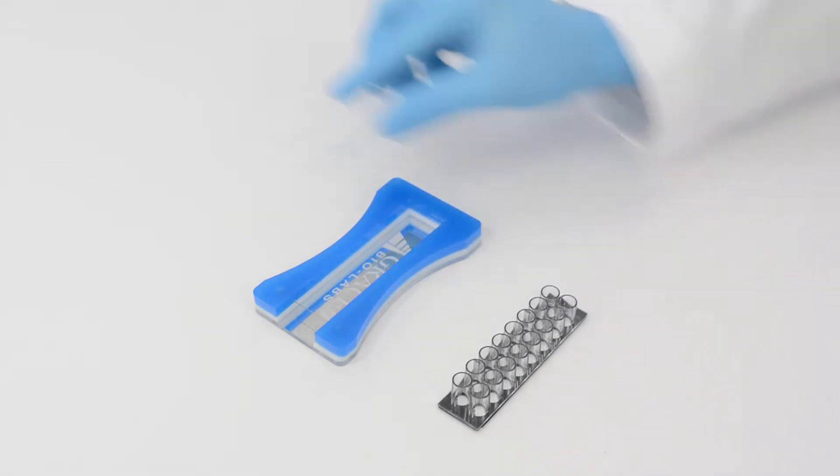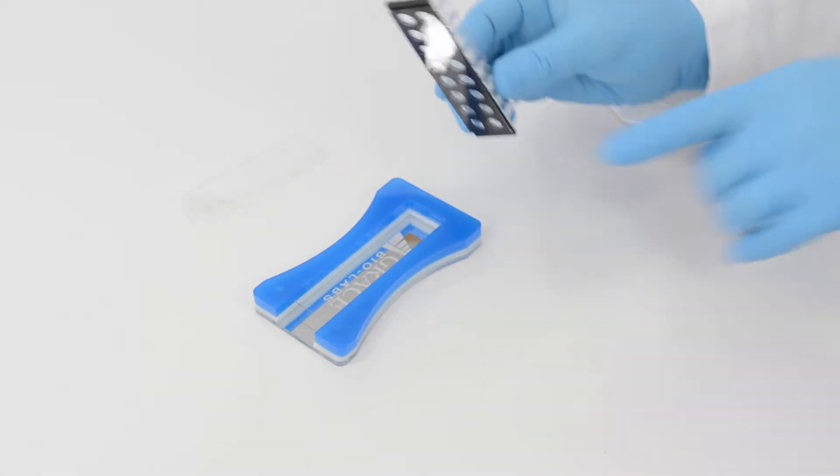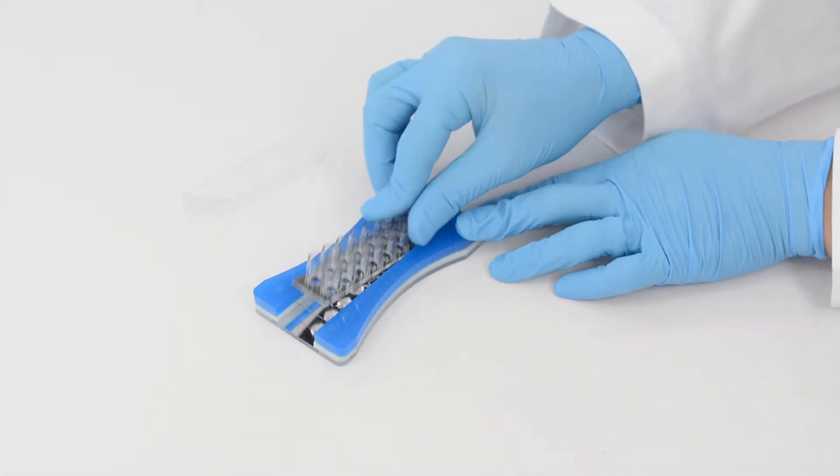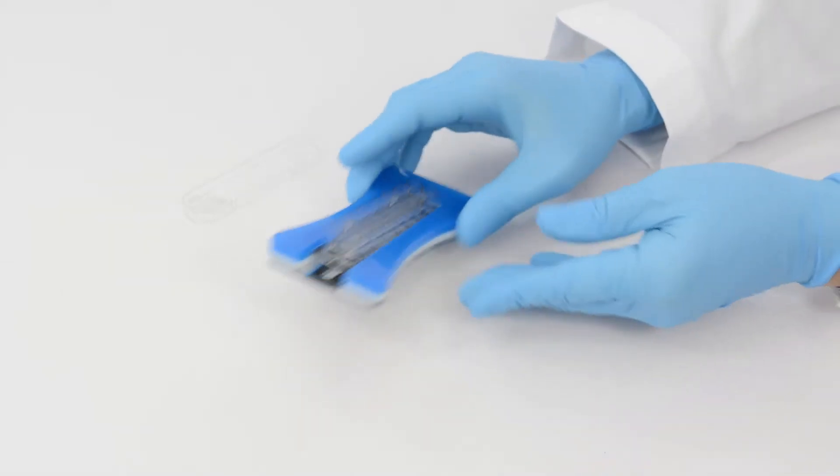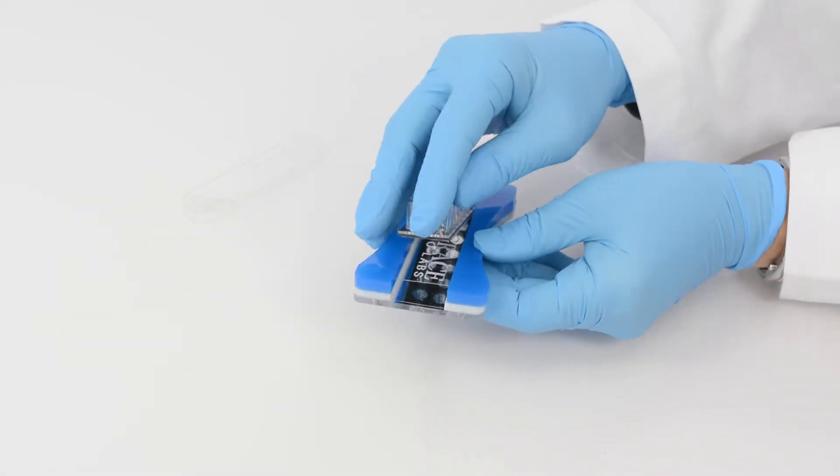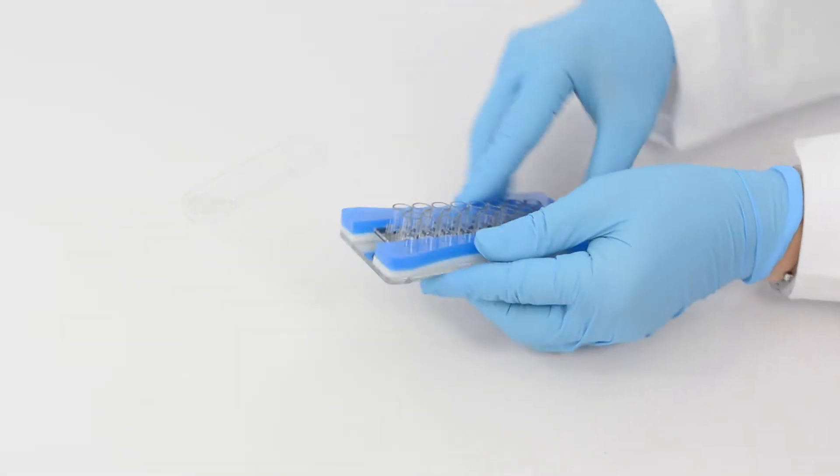Start by aligning the back of the CultureWell chambers with the back of the removal tool. Now the edge of the coverglass should sit directly behind the wire in the removal tool.